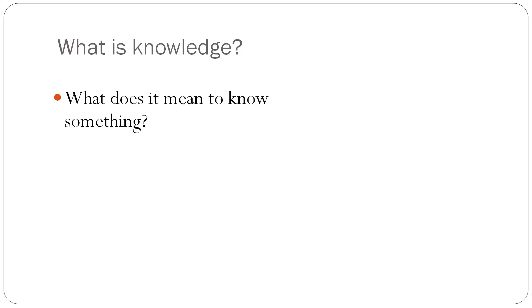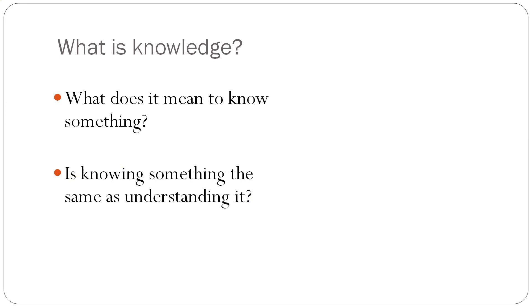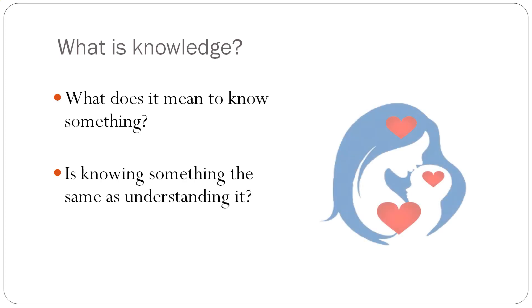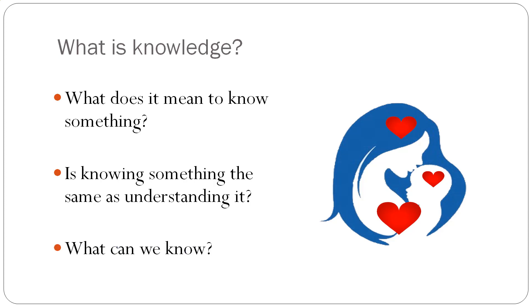So what does it mean to know something? Is knowing something the same as understanding it? For example, if I'm looking at a parent and child relationship in terms of attachment — if I know what attachment is, is that the same as understanding what attachment is? And this leads to the second question of what can we know? What can we know about attachment? So to get at answering this question, we have to look at different research paradigms.